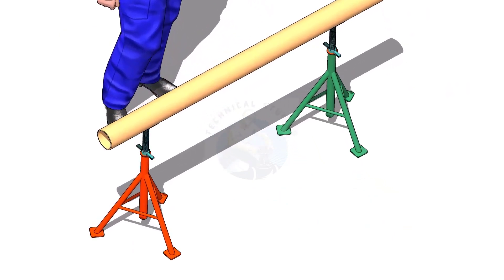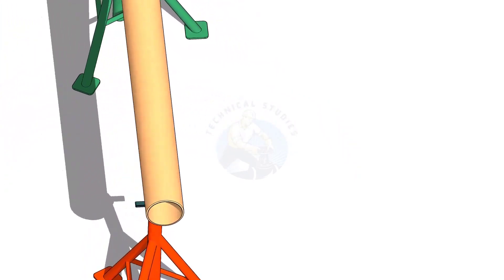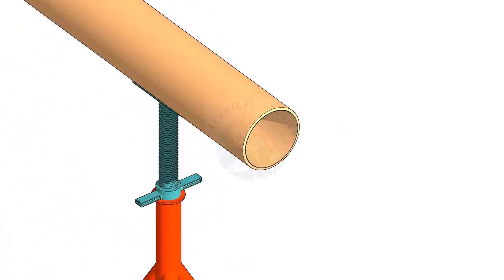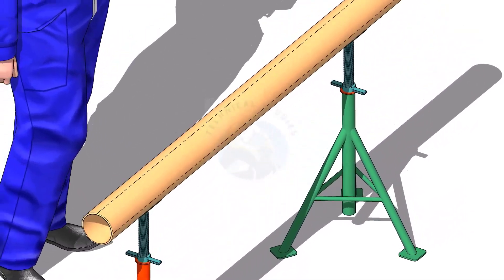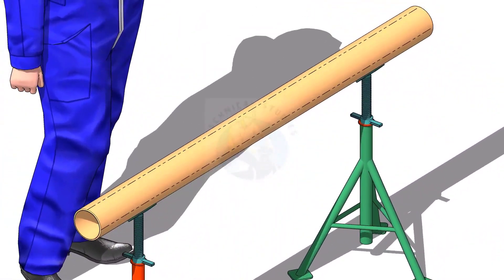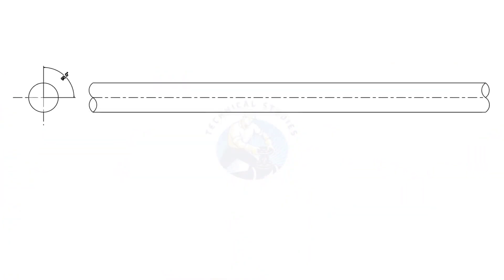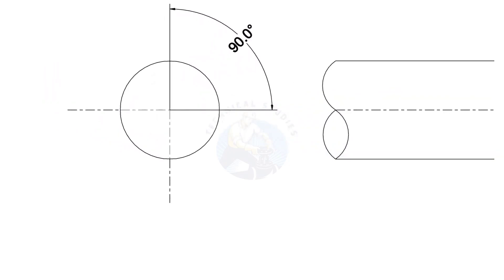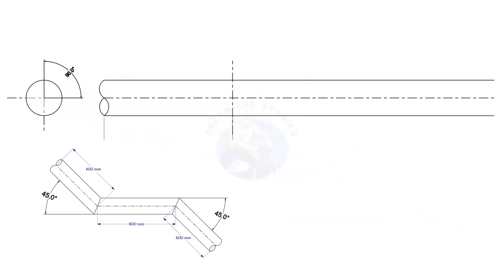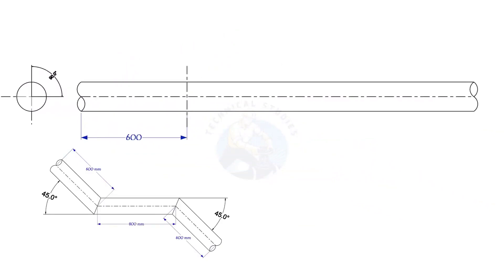Put the pipe on stands and mark 4 center lines. Mark 600, 800, and 600 millimeters, respectively, as shown.